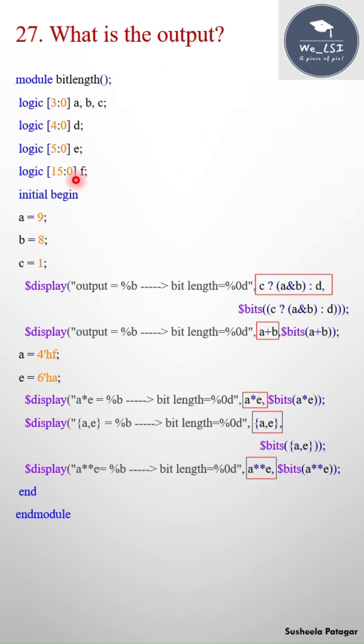What is the output for the below code? Here I have declared few variables with a different vector size and I am assigning some values to the variables. In the display statement I am printing the output for the given expression.